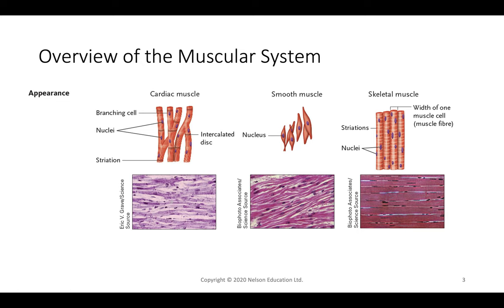Cardiac muscle all moves in concert. One region gets innervated — called a node — and that spreads out. We go from one node to the second node, and between those two nodes the entire muscle is contracting. Each node does the lub, the other does the dub, and that allows for the contractions of the heart.